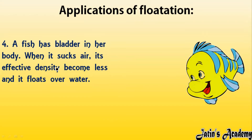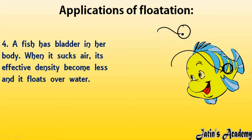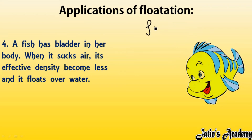A fish has a bladder in its body. Whenever it sucks air from the water into the bladder, the volume of the bladder increases — for example, from a small size to a larger one. As we know, density equals mass divided by volume. So when air moves inside the bladder, volume increases, which means density decreases. If density decreases, the fish can float in seawater.